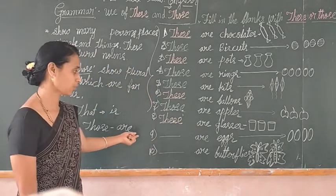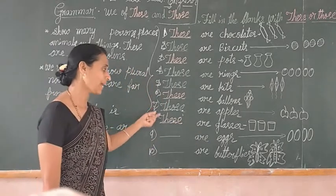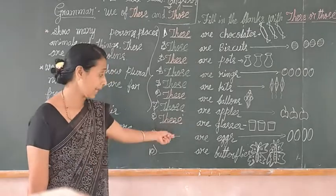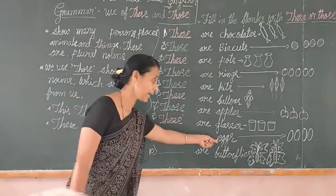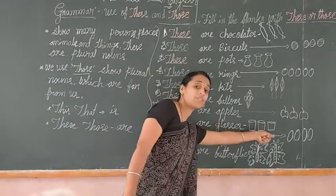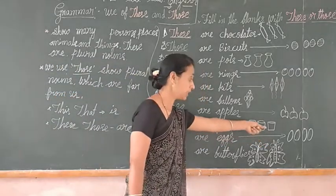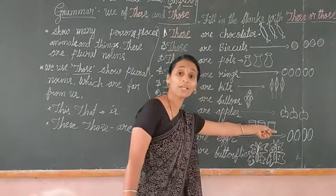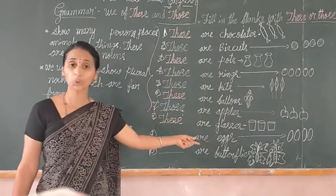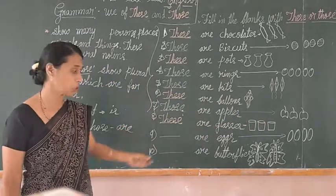Ninth example: blank of eggs. Are the eggs near to me or far away? Far away from me, so we can use 'those.'